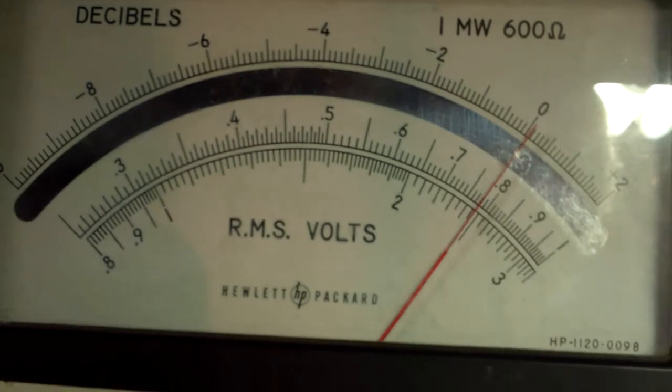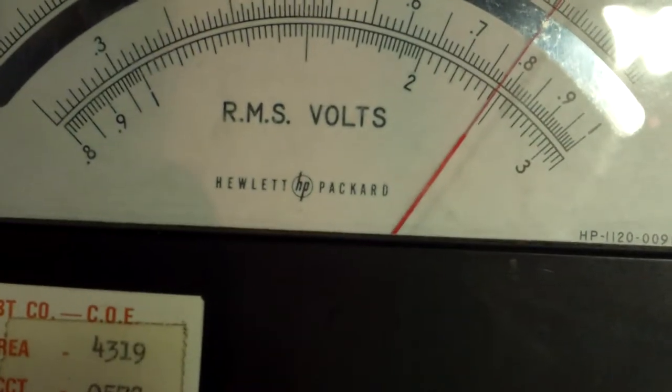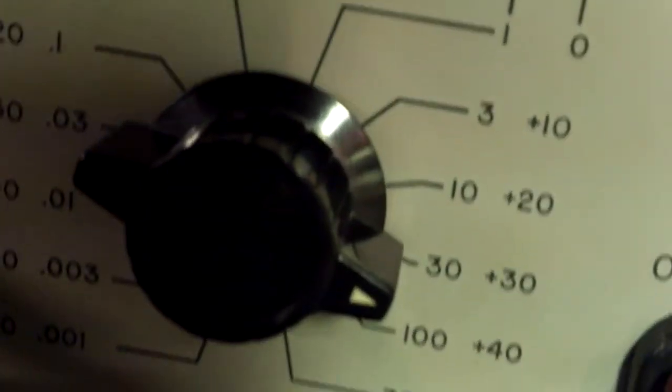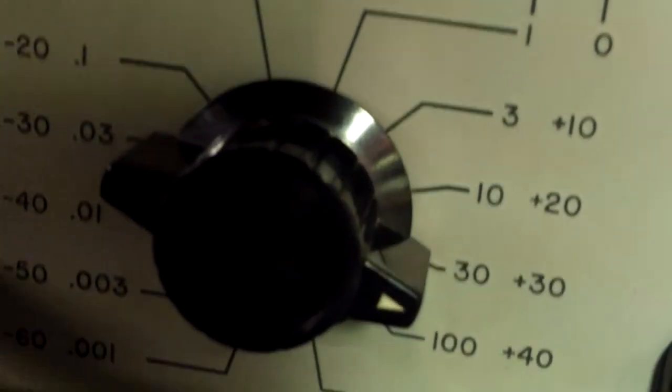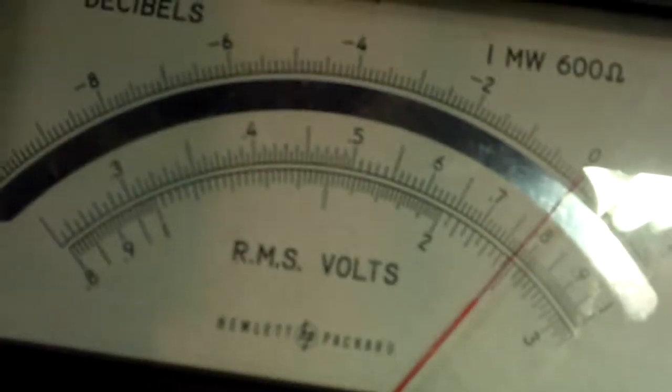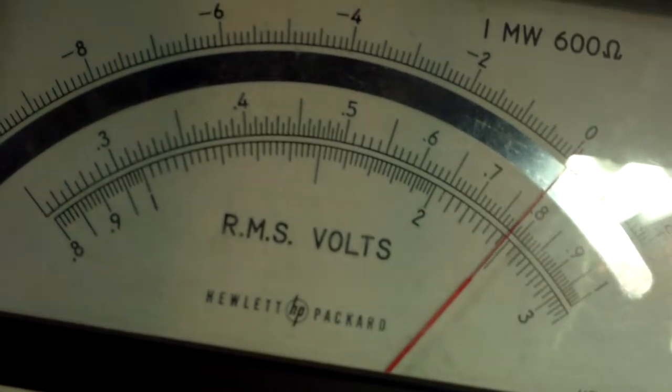The way this works is for voltage, anything that ends in a one you read on the top scale. There, I guess it's the middle scale because there's also the decibel scale. Anything that ends in a one you read on that middle scale for volts. Anything, any of the voltage ranges that ends in a three you read on the, I guess it's the point eight to three scale. And of course anything in the DB ranges you read on the top DB scale.